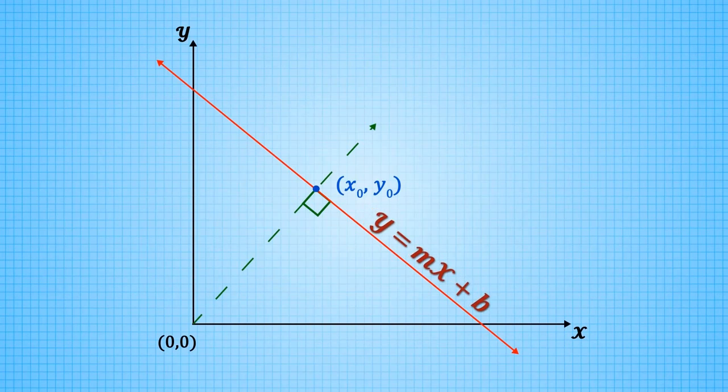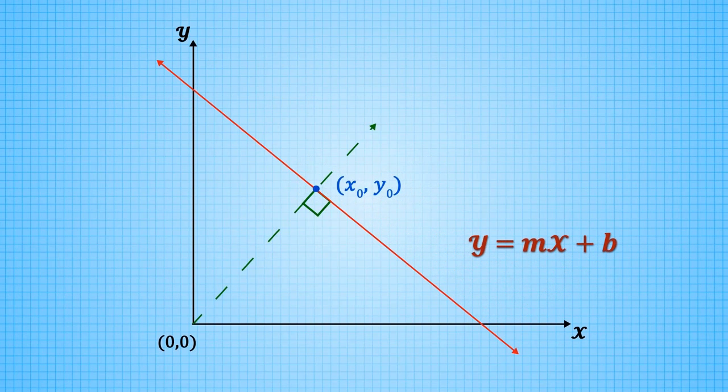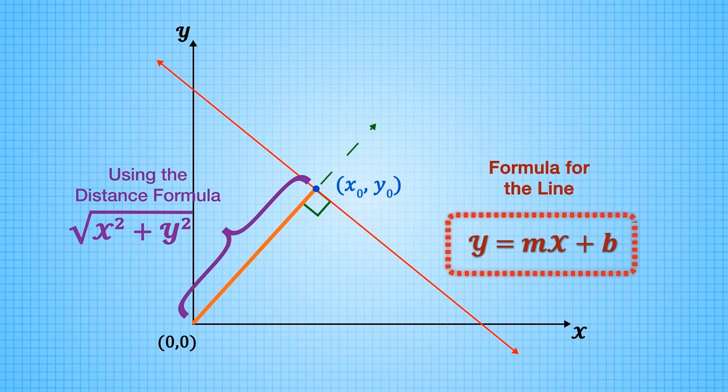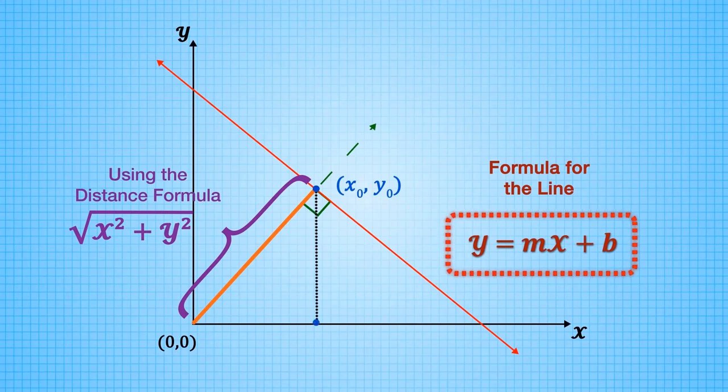Given the line y equals mx plus b, we want to find the point x0, y0 on this line such that the distance to the origin is minimized. In other words, using the distance formula and the formula for the line, the goal is to find the value of x0 that minimizes this equation.